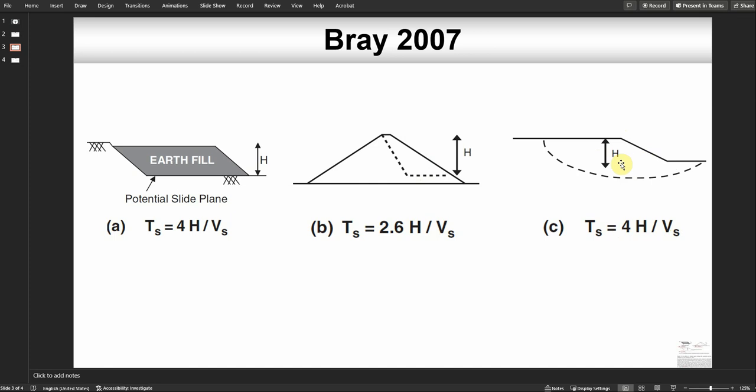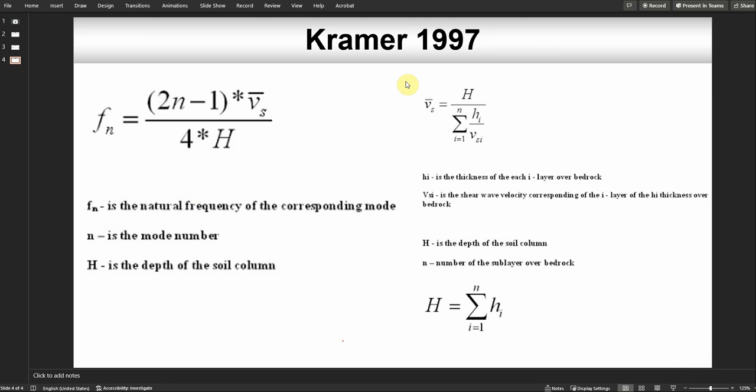For Kramer 1996 or 1997, we can use this equation in terms of the fundamental frequency: fn equals (2n-1) multiply with average shear wave velocity of different layers, divided by 4H. Vs can be estimated using this equation.